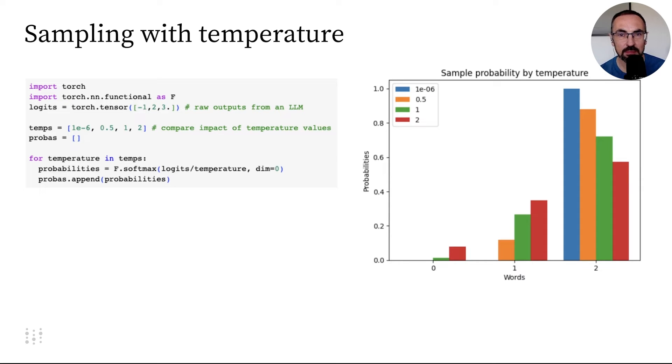Lower temperature makes less probable tokens even less likely. As temperature approaches zero, this method becomes like greedy decoding. High temperature values might generate less useful text, and we will experiment with temperature in our next video.